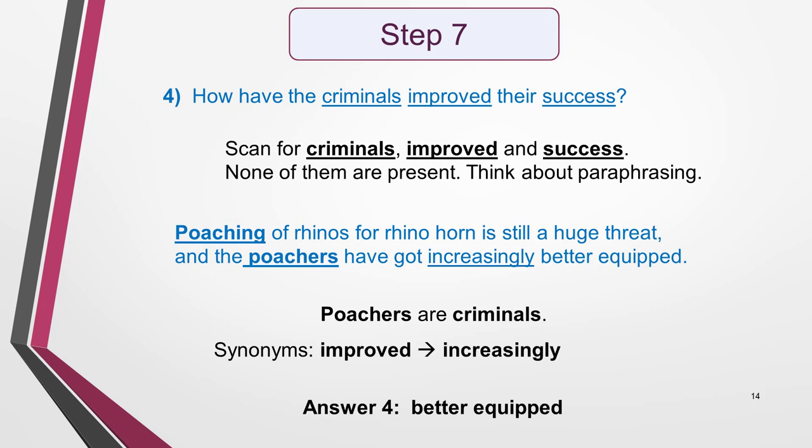Having selected the keywords from the final question — for which I've chosen 'criminals', 'improved' and 'success' — I find that none of them are in the text, so I must think about how the text might paraphrase the meaning of the question. I know that the answer will be in the final paragraph, so I read this in detail. The first sentence, which gives the main idea of the paragraph, is about poaching and poachers, so I can guess from the context that poachers are criminals, even if the word is unfamiliar to me. The only word I can see that could be a synonym of 'improved' is 'increasingly', and the words following it are 'better equipped', so I can make a good guess that this is the answer, even if I don't fully understand the whole sentence. I quickly read the final sentence to make sure I haven't missed a better answer — I haven't, so this must be it.